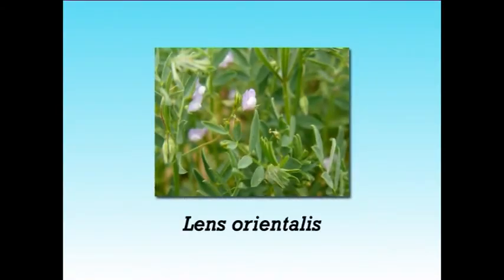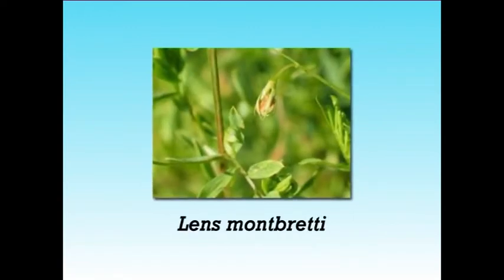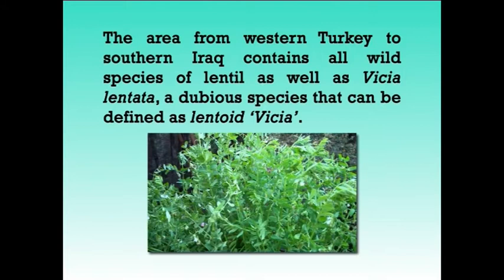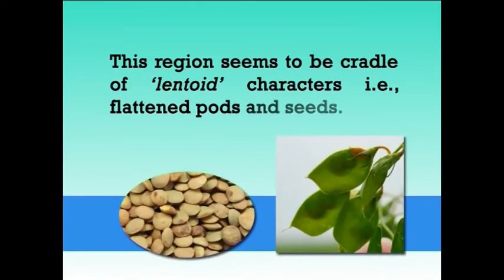The distribution of genus Lens indicates that the Mediterranean region was the probable area of domestication. Four wild species of lentil are Lens orientalis, Lens nigricans, Lens odemensis, and Lens montbreti, which exist in different geographical regions. The area from western Turkey to southern Iraq contains all wild species of lentil. This region seems to be the center of lentil, with characteristic flattened pods and seeds.